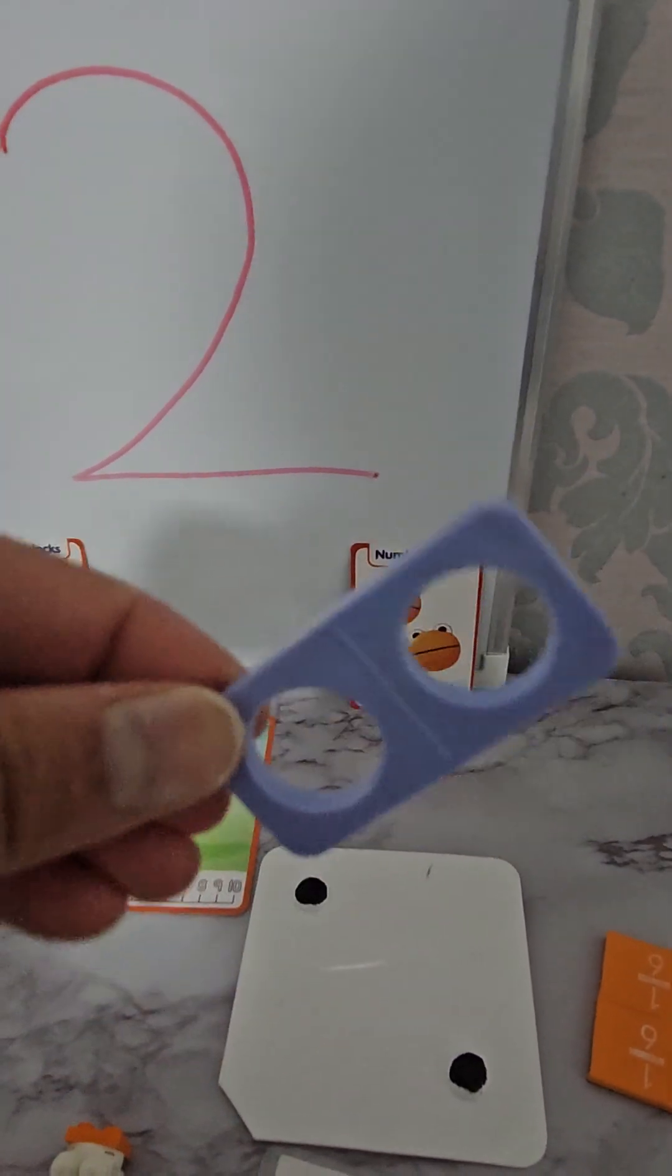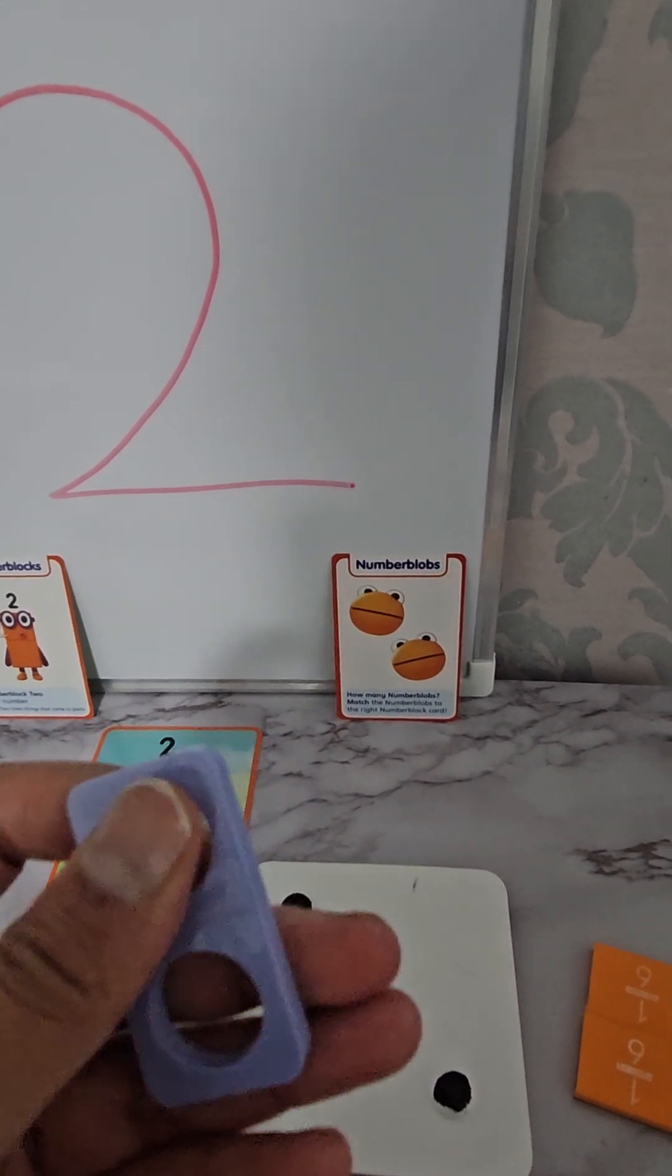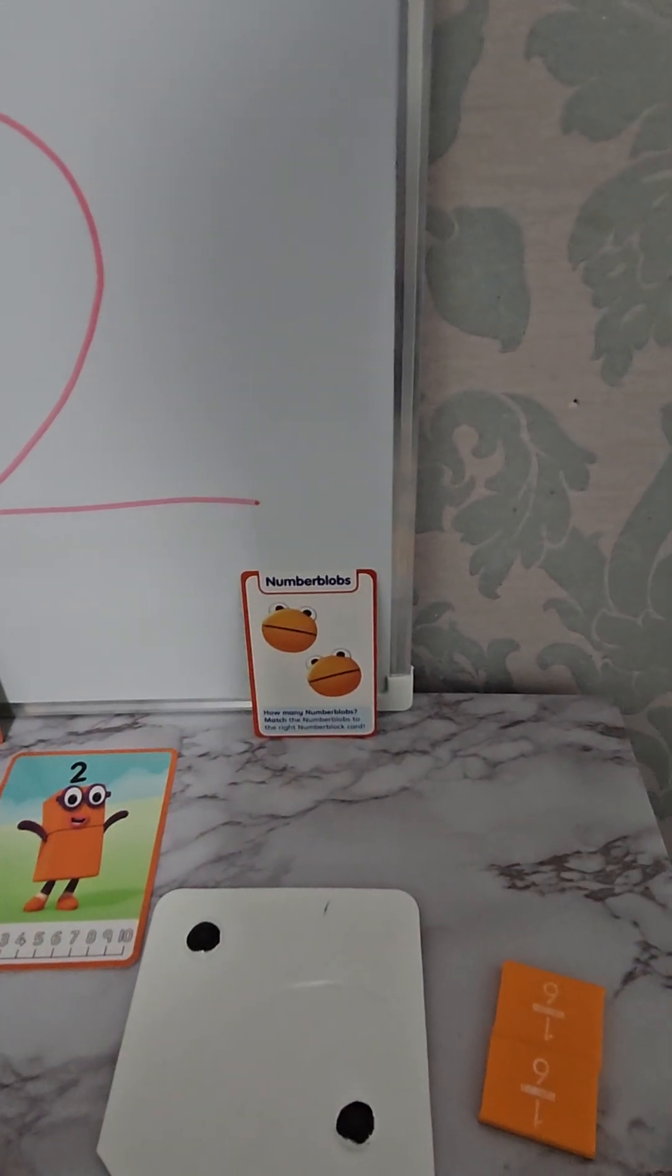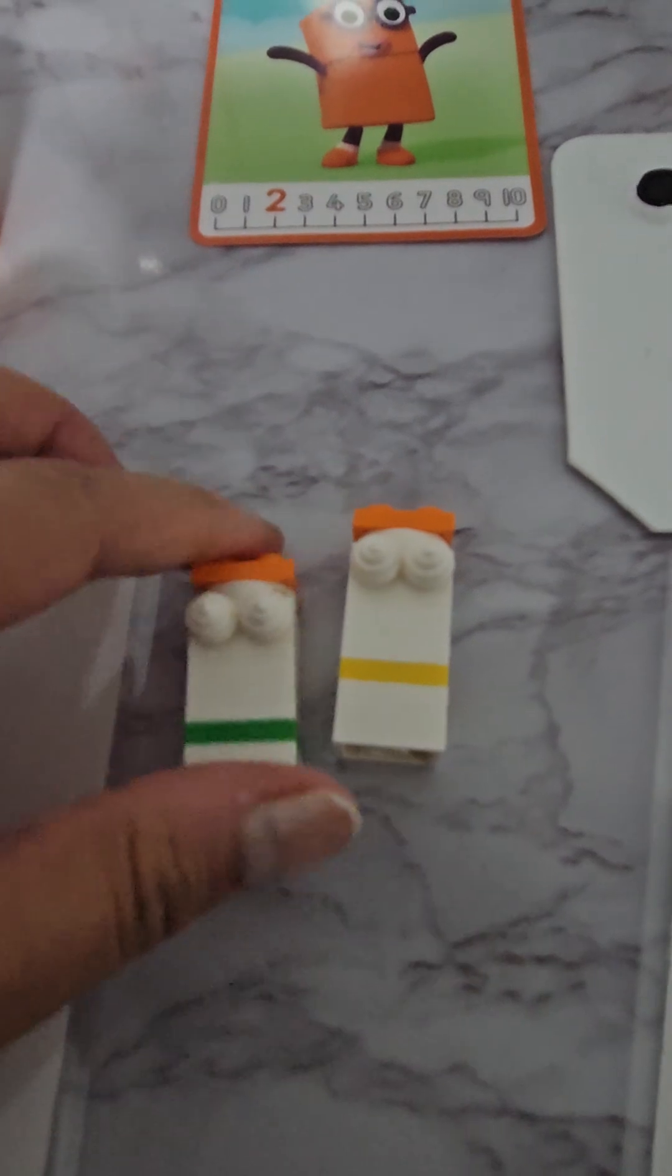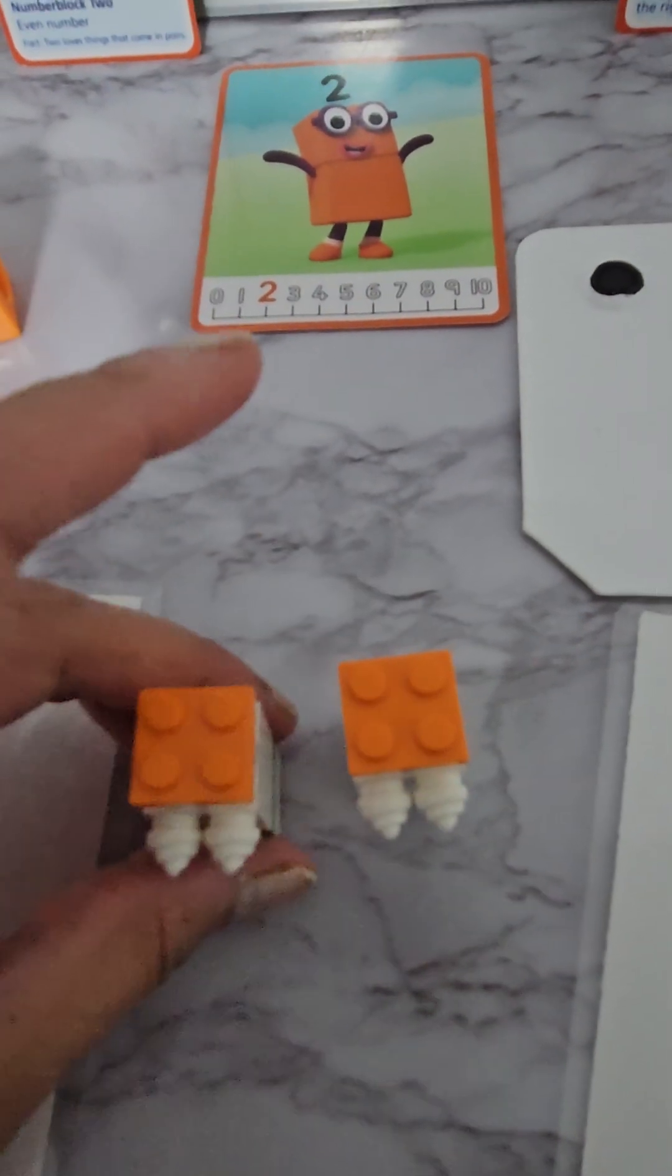This is two numicons. You can feel the dots and count. One, two. These are two little men with orange hair. They come in pairs. These are two rectangles. They are also pairs.